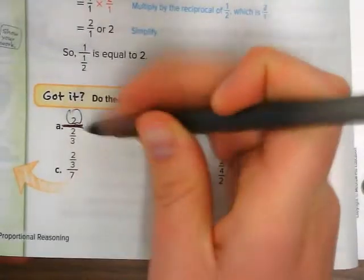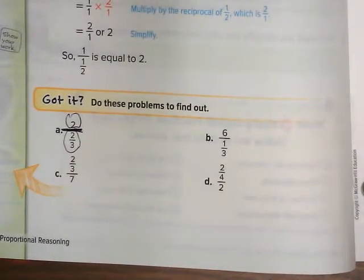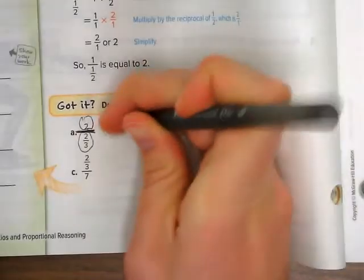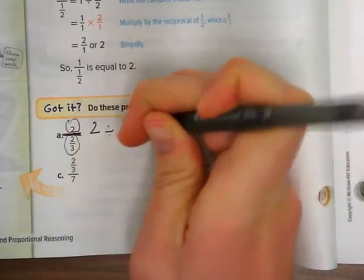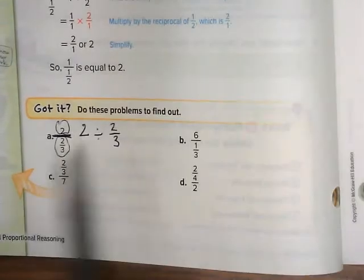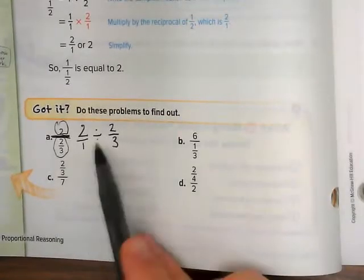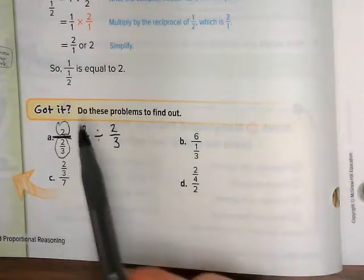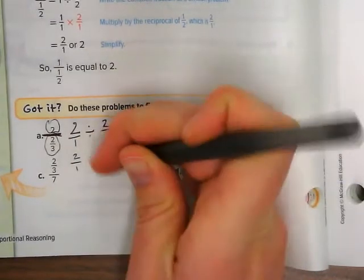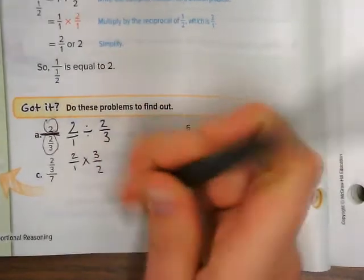It's 2 over 2 thirds. Now I know every fraction is a division problem. So I'm going to do 2 divided by 2 thirds. I want this to be a fraction though. That'll help me divide fractions. 2 over 1 divided by 2 thirds. Now I'm going to do my keep, change, flip. Keep the first one the same, change division to multiplication, and flip this over.